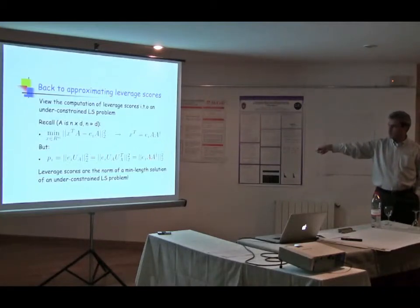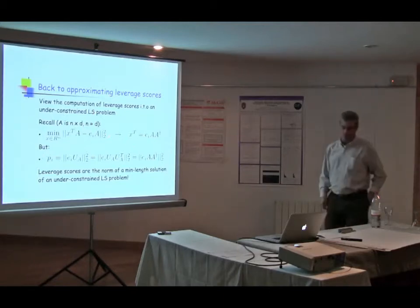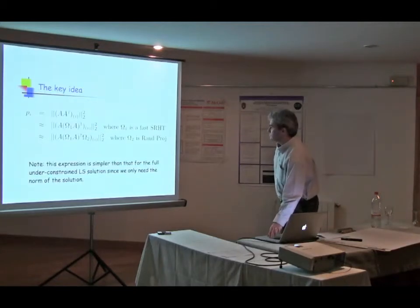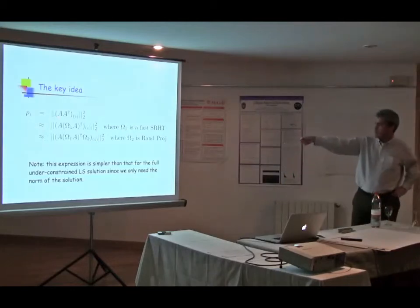But this is a projection matrix. And if I want to make my life difficult, I can write that projection matrix this way. So the leverage score is equal to the Euclidean norm of this quantity. We're going to make it related to this under-constrained least squares problem.